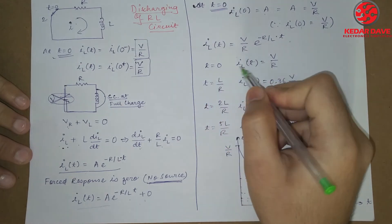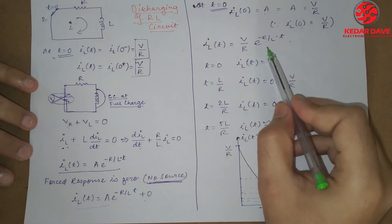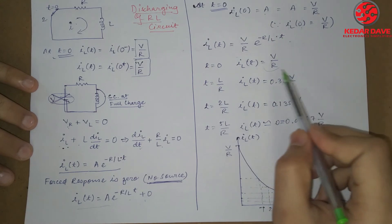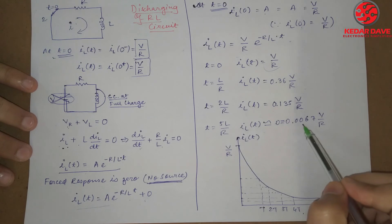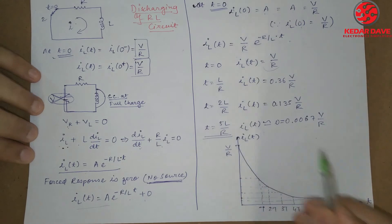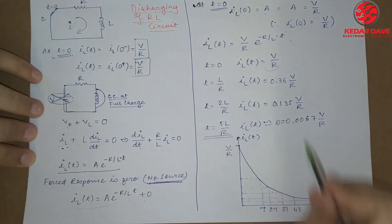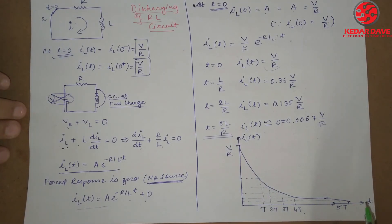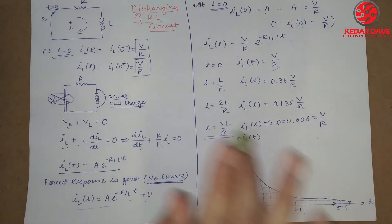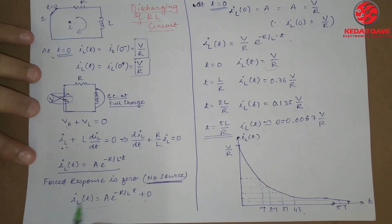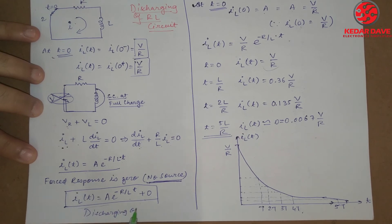Plotting the graph for different values of the time constant: at zero time constant the current is V by R; at one time constant it is 0.36·V/R; at two time constants it is 0.135·V/R; at five time constants it is approximately 0.0067·V/R. At five time constants this inductor will be fully discharged. This is the complete discharging equation for the RL circuit.